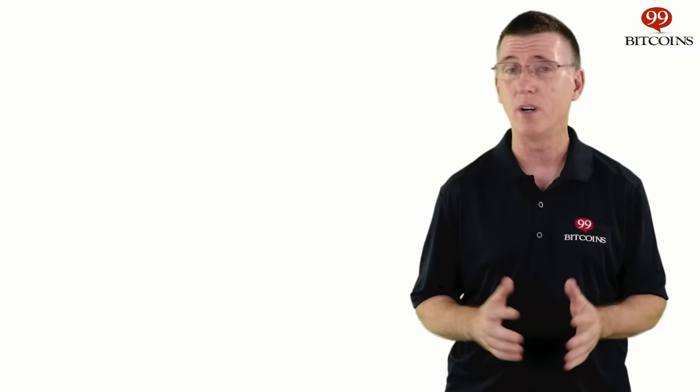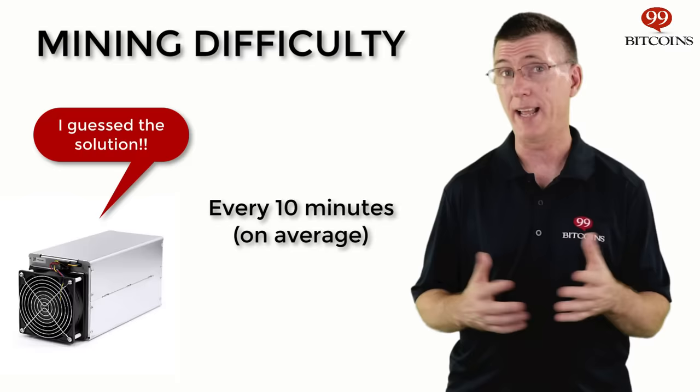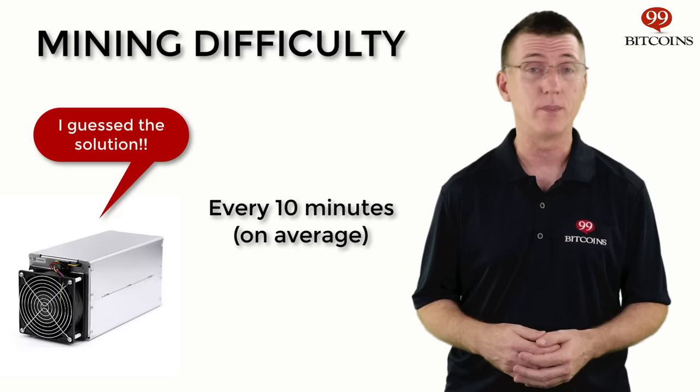So why did Satoshi do this? He wanted to create a steady flow of new bitcoins to the system — in a sense, this was done to keep inflation in check. The mining difficulty is set so that on average, a new block will be added every 10 minutes. We can have two blocks being added minute after minute, and then wait an hour for the next block, but in the long run this will even out to 10 minutes on average.